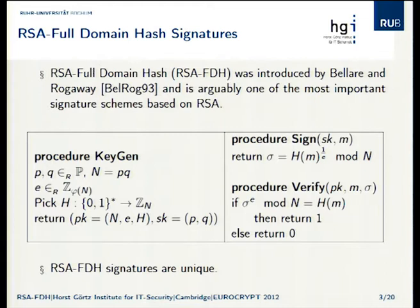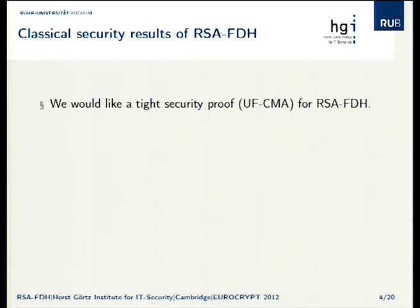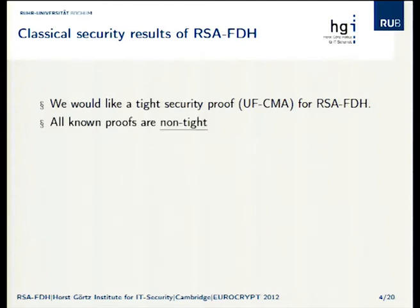RSA full domain hash signatures are unique. This is quite a nice property, and we'll need this later. So what we'd like is a tight security proof — that means we'd like it to be tightly secure, or unforgeable in the chosen message attack scenario. This sort of helps us pick parameters in practice, and tightness is important to help us with this. As we heard earlier, sadly, all the known proofs are non-tight.